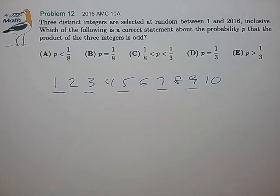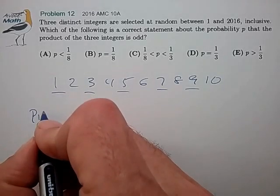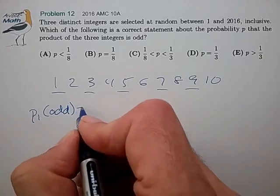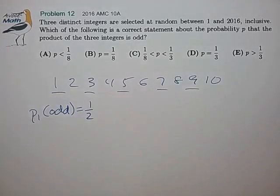So if we were to select the first integer to be odd, the probability of doing that would be exactly 1 half. That's pretty simple to see.